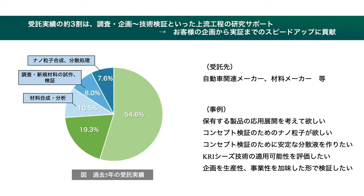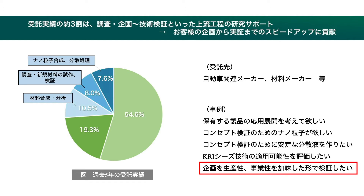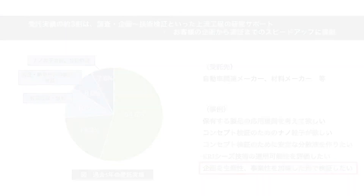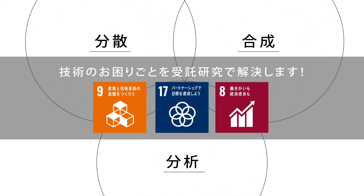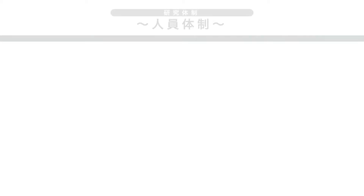受託実績の約3割は、上流工程の研究サポートであり、お客様製品の応用調査や企画から、世の中に流通していないナノ粒子や化合物を欲しいといった技術検証のための材料合成など、様々な案件を受託しております。最近では、お客様の企画案件を実現するために、コスト・生産性を踏まえて提案・検証するといった、上流工程でありながら事業創出を強く意図した案件も増えてきております。このように、新機能性材料研究部では、分散・合成・分析の3つの技術を柱に、経験豊富な研究員が、上流から下流に至る幅広い領域の技術課題のソリューションを提供しています。